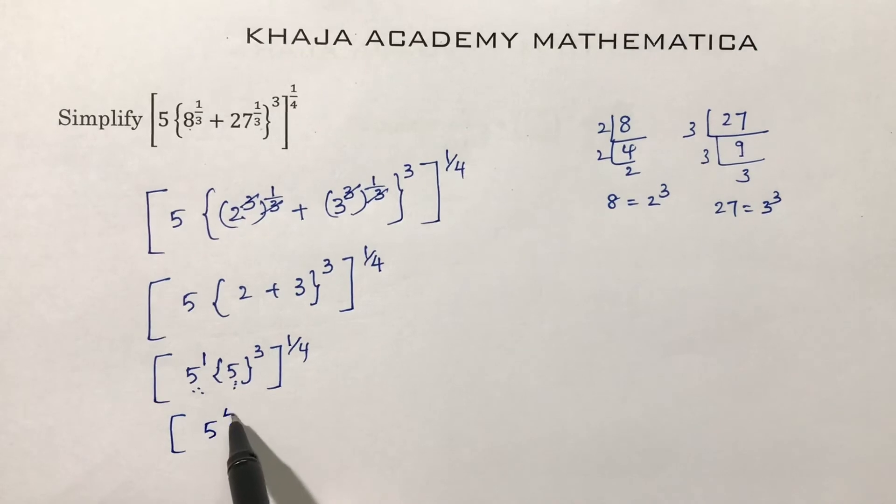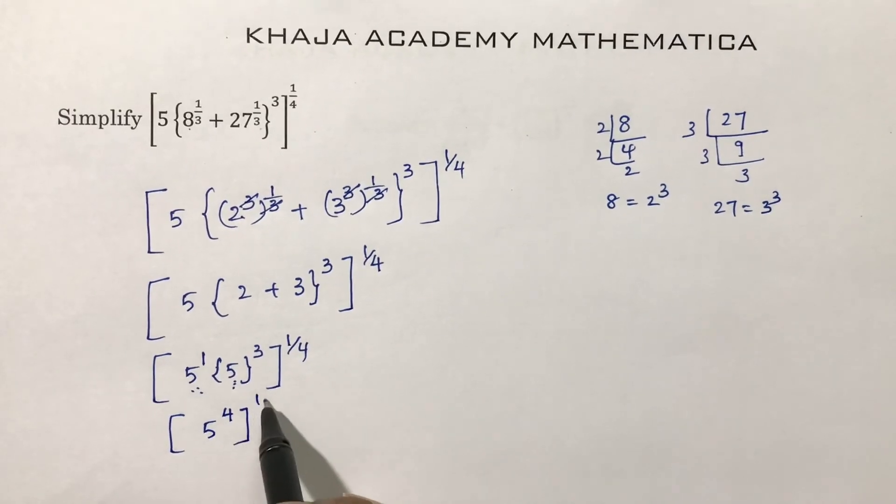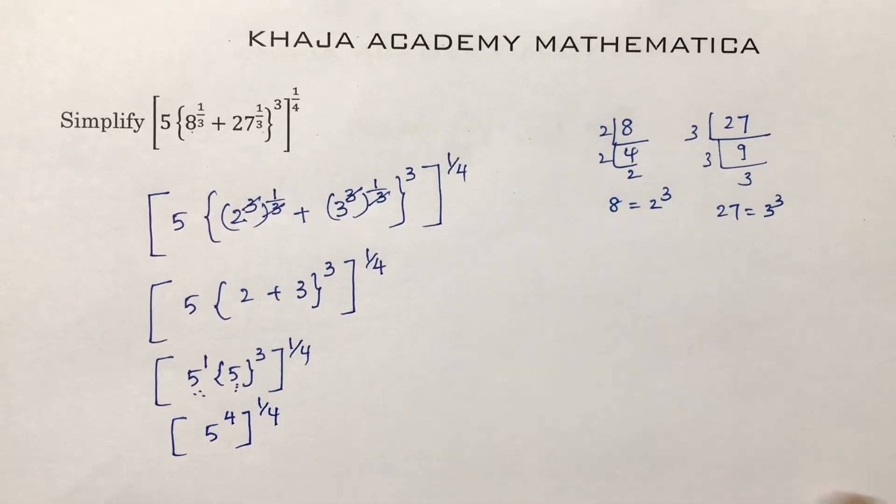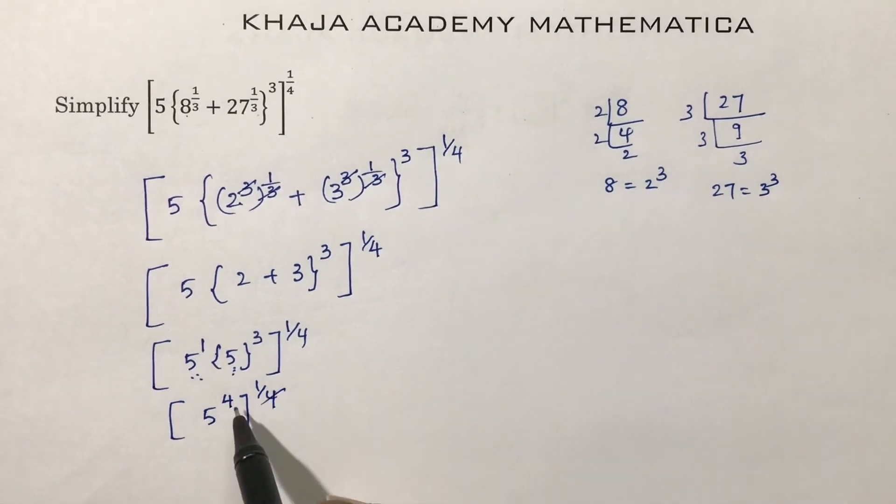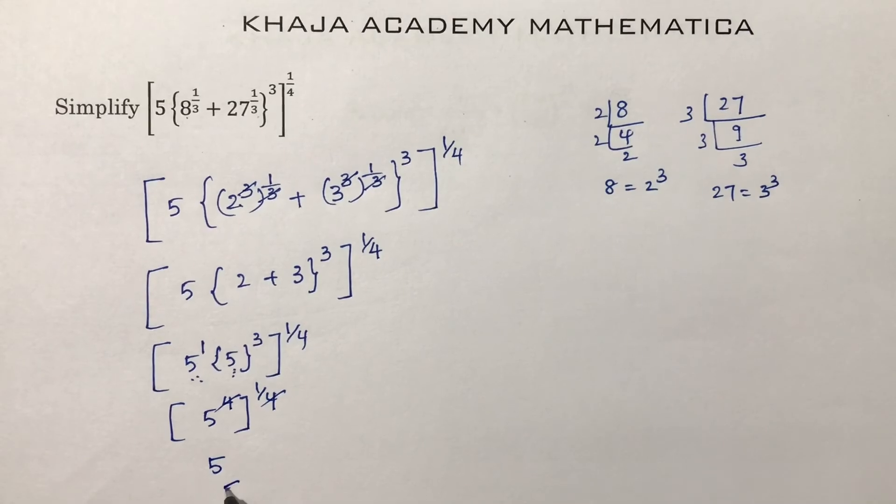Now here, 4 and 4 will get cancelled, so you are left with 5 power 1. So the answer is 5.